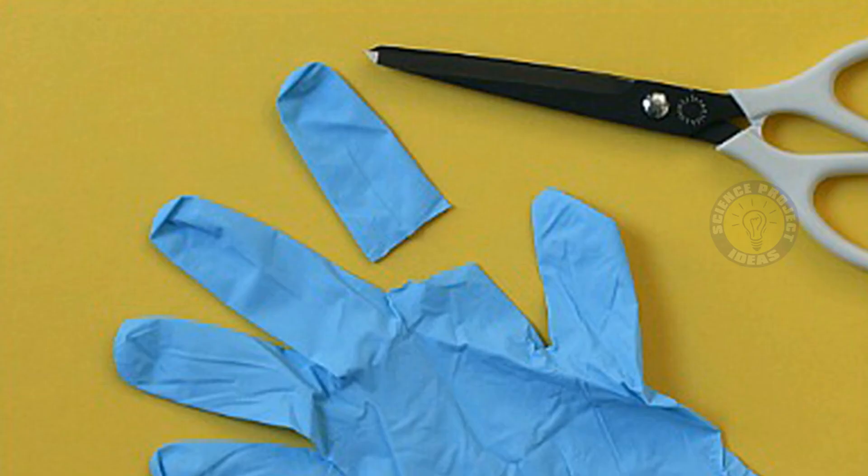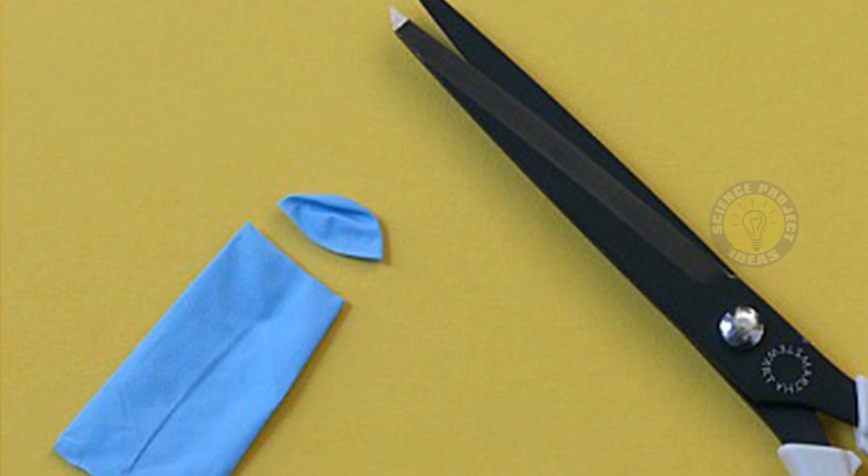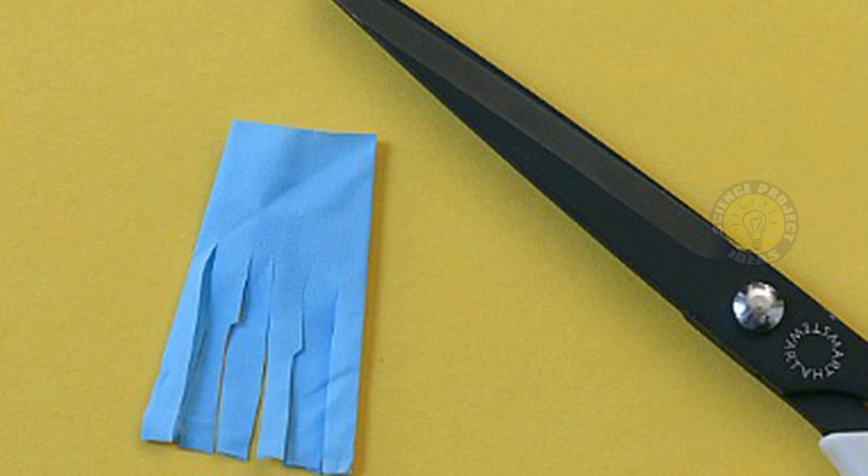Cut off the finger of a plastic glove. A thin balloon would probably work too. Cut off the top of the finger so you have a sleeve. Use sharp scissors to cut some legs along the bottom of your sleeve.